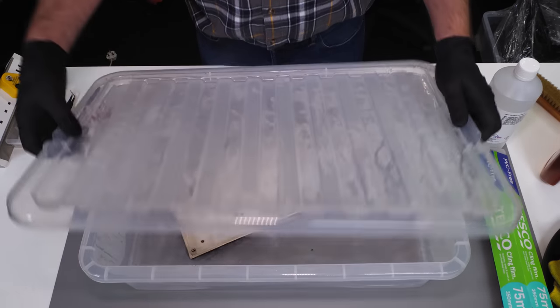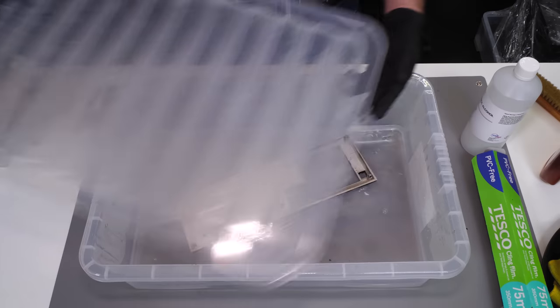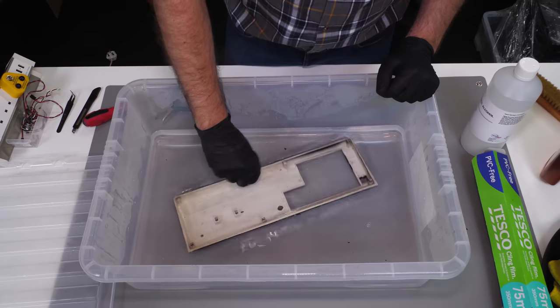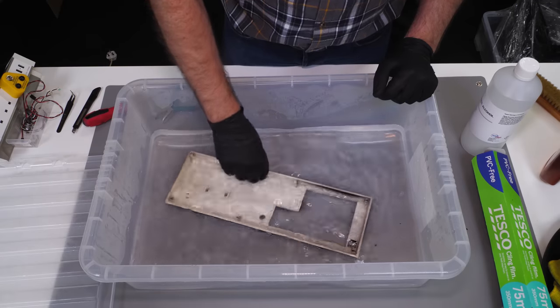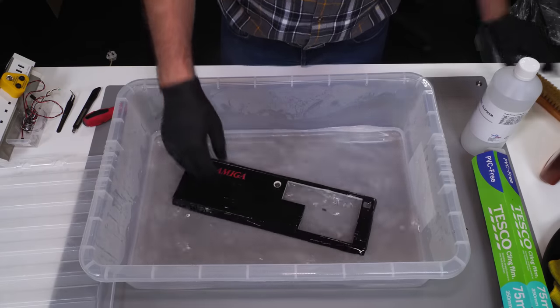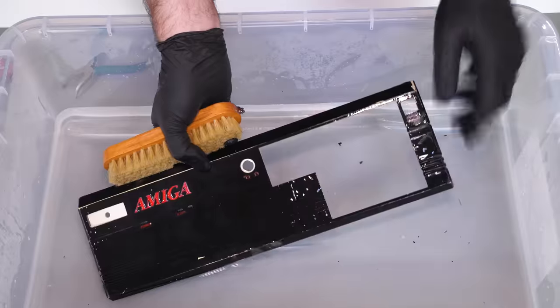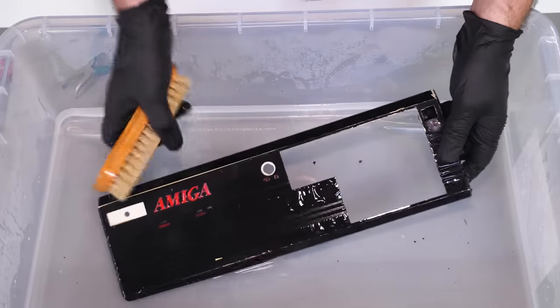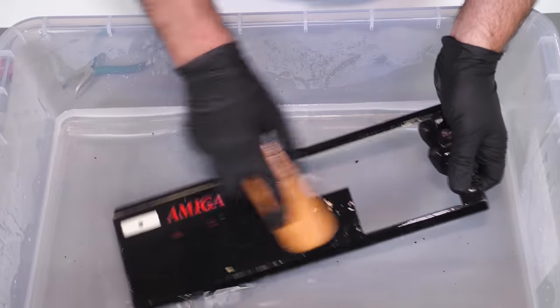Into the IPA and water goes the keyboard casing. And out comes the front. Let's see how that's getting on. See how the paint has crinkled in some places? That's promising. And look at that. It's working.